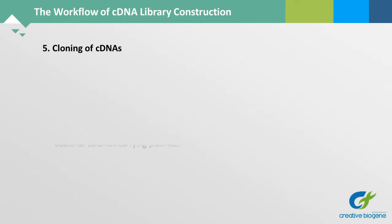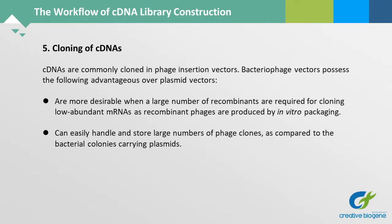Step 5: Cloning of cDNAs. cDNAs are commonly cloned in phage insertion vectors. Bacteriophage vectors possess the following advantages over plasmid vectors: they are more desirable when a large number of recombinants are required for cloning low-abundant mRNAs, as recombinant phages are produced by in vitro packaging, and they can easily handle and store large numbers of phage clones compared to bacterial colonies carrying plasmids.